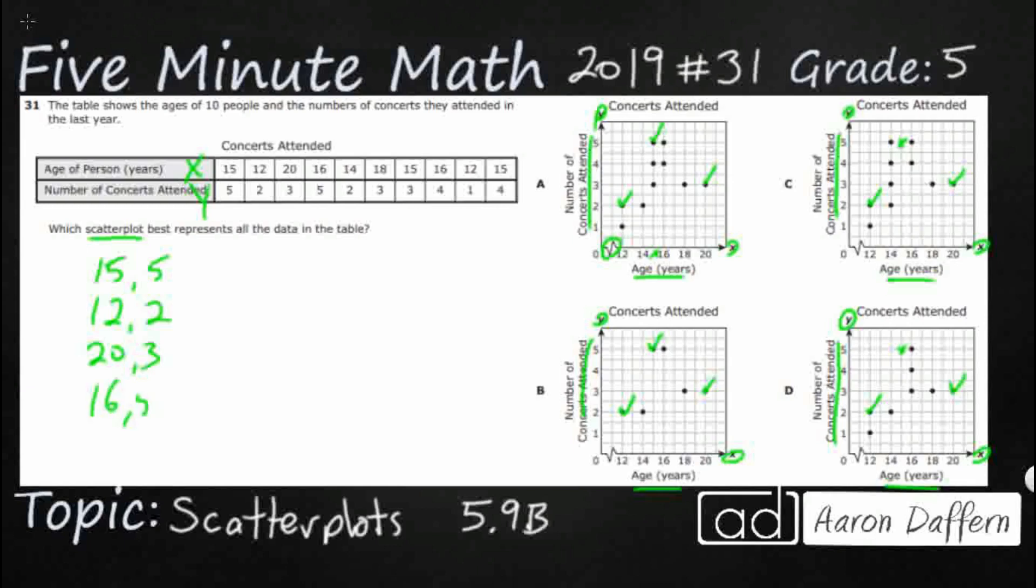16 comma 5. So 16 comma 5 is good on A. It's good on B. It's good on C. And it is good on D. Let's check 14 comma 2. So I've got 14, 2 is good on A. Good on B. Looks like I'm running out of dots on B though. There's my C and D is looking good.